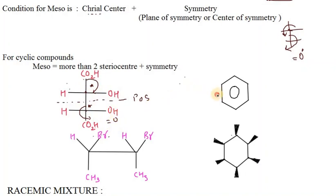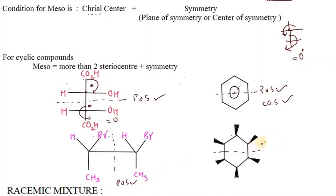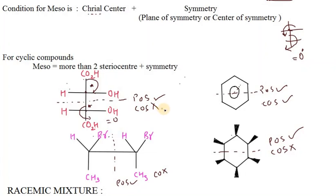For the benzene derivative, it is also a meso compound because it has both a plane of symmetry and a center of symmetry. For the next molecule, it is meso because of its plane of symmetry — either a plane or center of symmetry qualifies. This molecule has multiple planes of symmetry, but does not have a center of symmetry. A single plane of symmetry is sufficient to make it a meso compound.